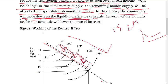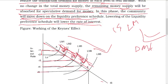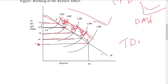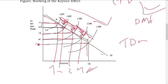In this phase, the community will move down on the liquidity preference curve. You are having a combination of R5 rate of interest and Y5 level of income at LM5 demand curve for money — that is L5, I5. This is the Keynes's Effect.